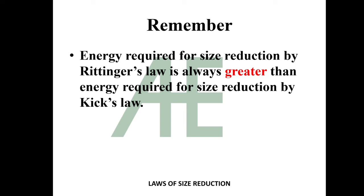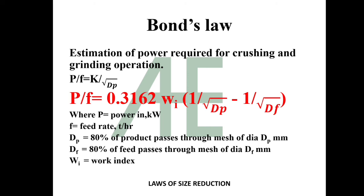Bond's law: Estimation of power required for crushing and grinding operation is given by Bond's law. P by f equals k by square root of dp, so which is k equals 0.3162 wi, where wi is work index and dp is 80% of product passes through the mesh of diameter dp millimeter and df is 80% of feed passes through mesh of diameter df millimeter.